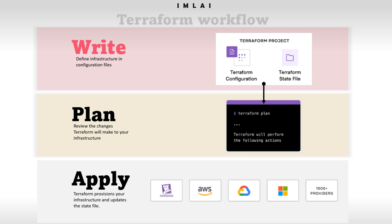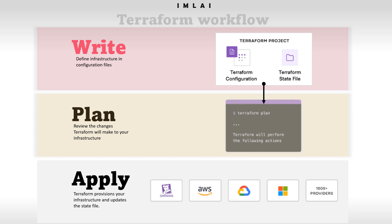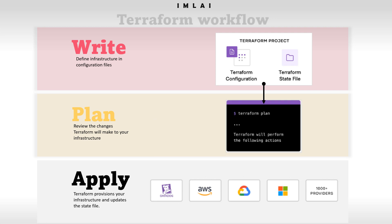The second stage is Plan. In the Plan stage, Terraform creates an execution plan describing the infrastructure it will create, update, or destroy — based on the existing infrastructure and the configuration you have written. The plan depends on your configuration file, and Terraform will show you a review of all the changes it will make to your infrastructure.